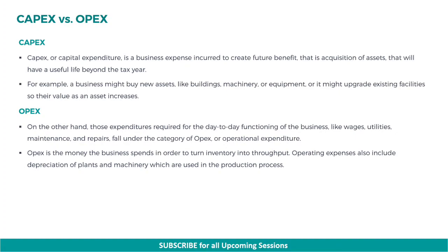On the other hand, those expenditures required for the day-to-day functioning of the business, like wages, utilities, maintenance, and repairs, fall under the category of OPEX, or operational expenditure. OPEX is the money the business spends in order to turn inventory into throughput. Operating expenses also includes depreciation of plants and machinery, which are used in the production process.